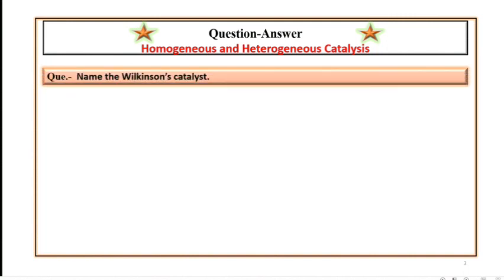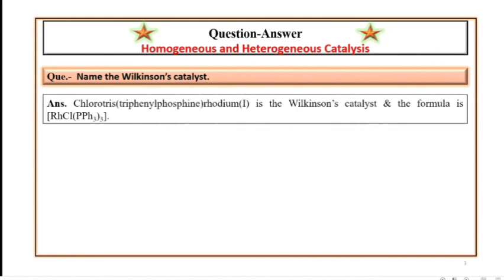Name the Wilkinson's catalyst. Chlorotris triphenylphosphine rhodium(I) is the Wilkinson's catalyst and the formula is RhCl(PPh3)3.